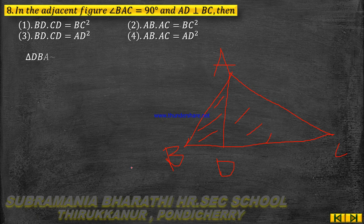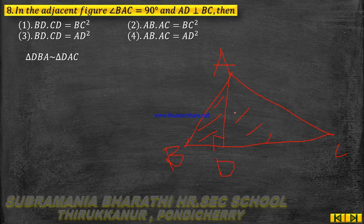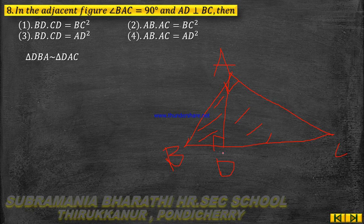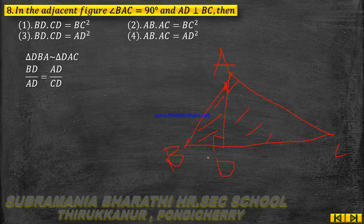Triangle DBA is similar to triangle DAC, because both contain a 90-degree angle. From this similarity, BD by AD equals AD by DC, relating the corresponding sides of the similar triangles.